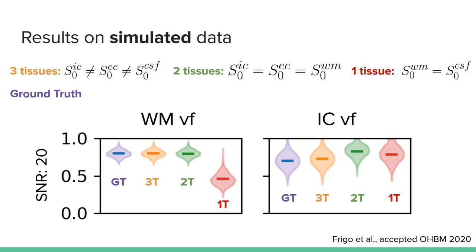We simulated the signal in 1,000 voxels with the model of the previous slide, and we estimated the white matter and the intracellular volume fractions using data with different signal-to-noise ratios. Here we show the results obtained for an SNR equal to 20. We considered three use cases of the multi-tissue formulation with NODDI. The three-tissue formulation considers one different S₀ for each of the three compartments. The two-tissue formulation instead considers only two different S₀s, one for the white matter compartment and one for the CSF compartment. Finally, the one-tissue formulation is mathematically equivalent to the classical formulation of NODDI.